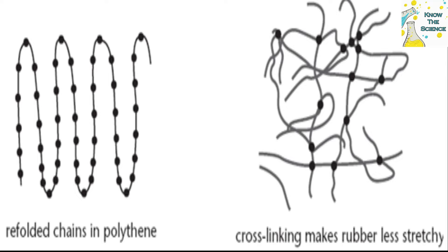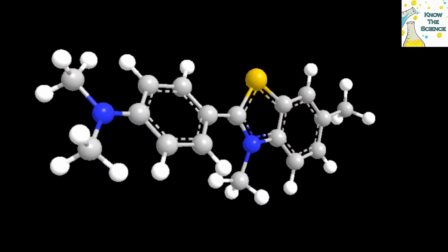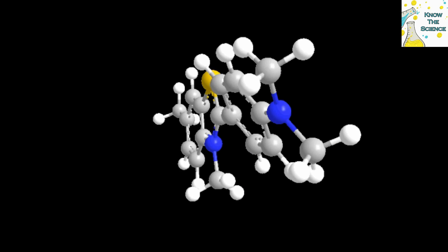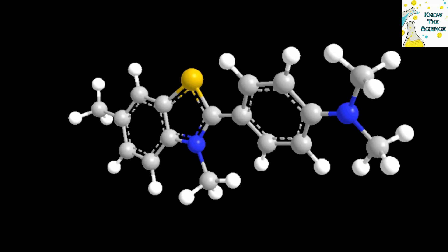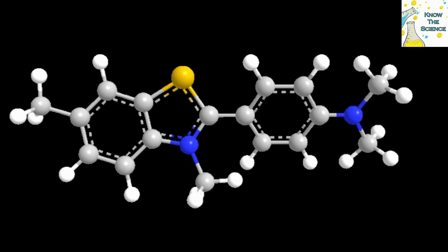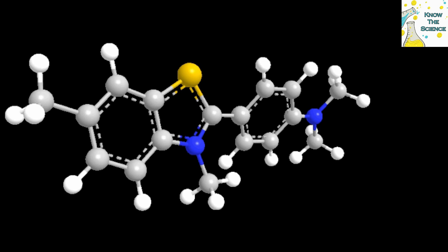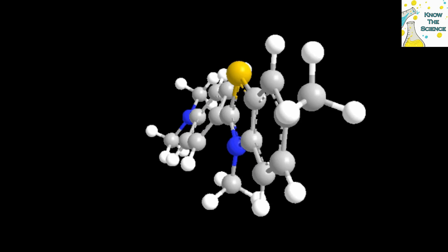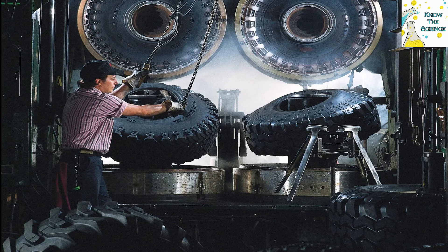During this heating phase, the sulfur atoms form bridges, or cross-links, between the polymer chains of rubber. These cross-links create a three-dimensional network within the rubber matrix, making it more stable and less susceptible to deformation at higher temperatures.